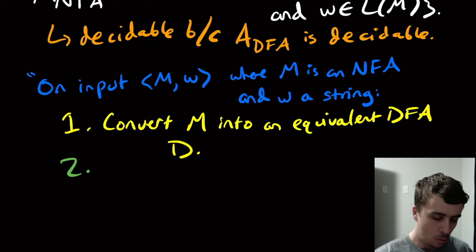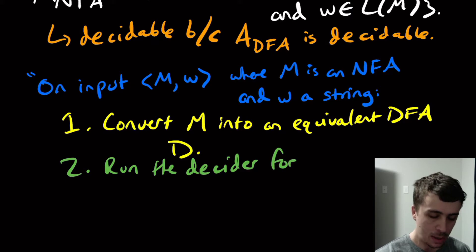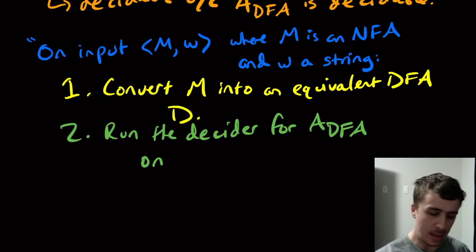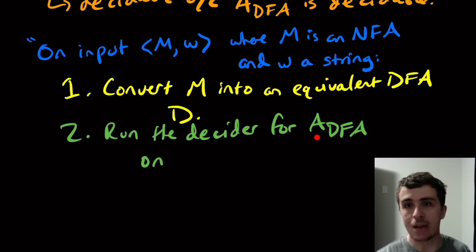So what I'm going to do here is run the decider for A_DFA on, well, and I need to say the decider here because A_DFA is a language. I can't run a DFA on something because it's just a language. I need to run the machine for this on some input.